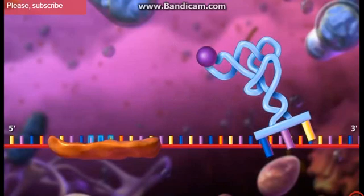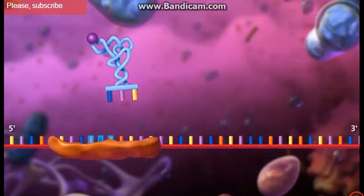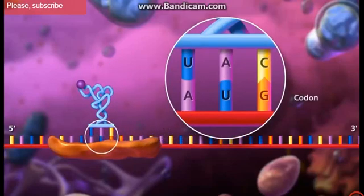The type of amino acid is determined by the anticodon sequence of the transfer RNA. Complementary base pairing occurs between the codon of the messenger RNA and the anticodon of the transfer RNA.